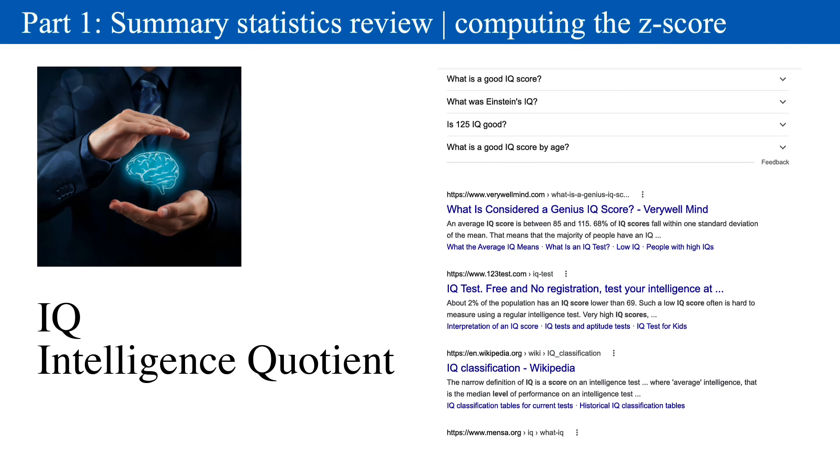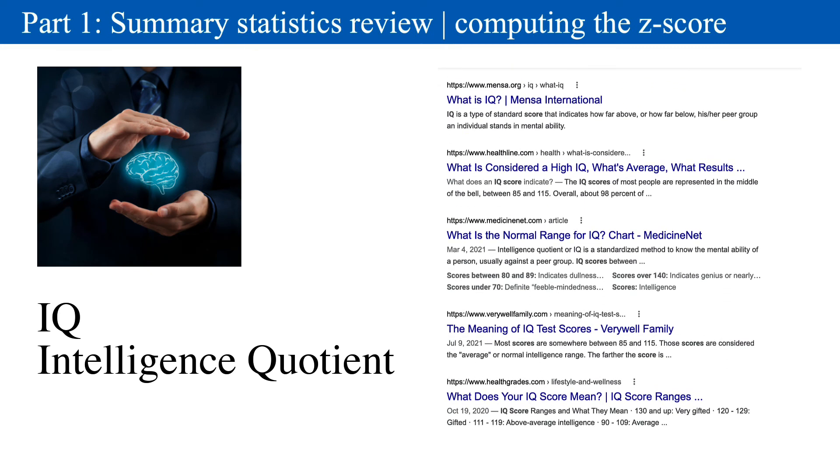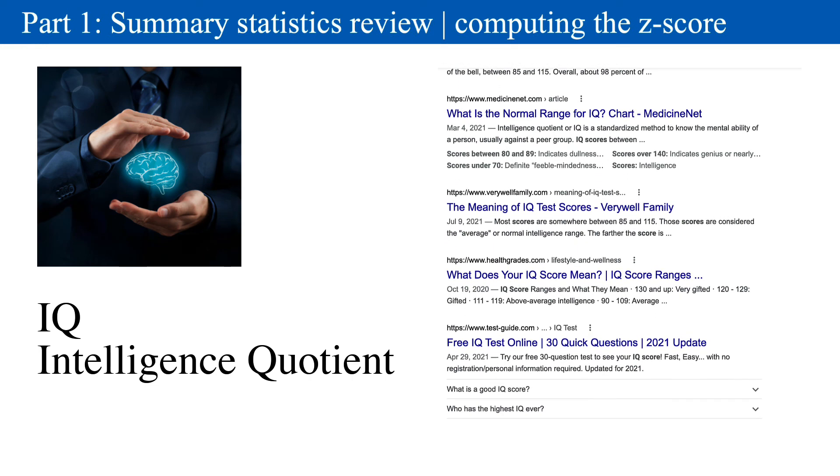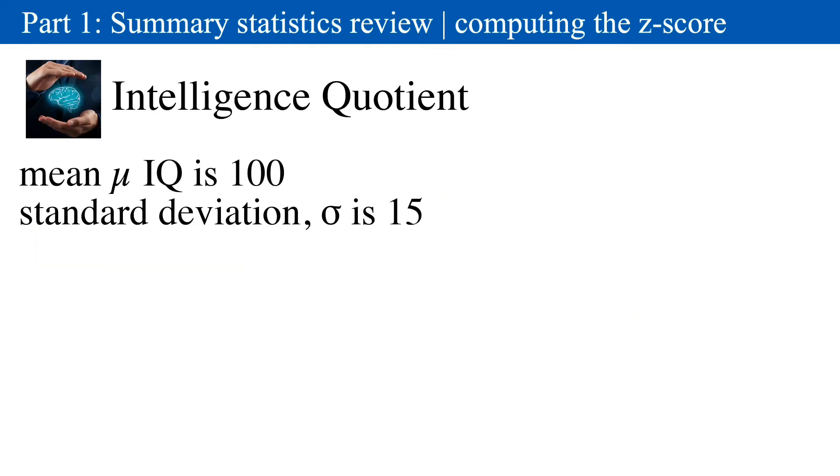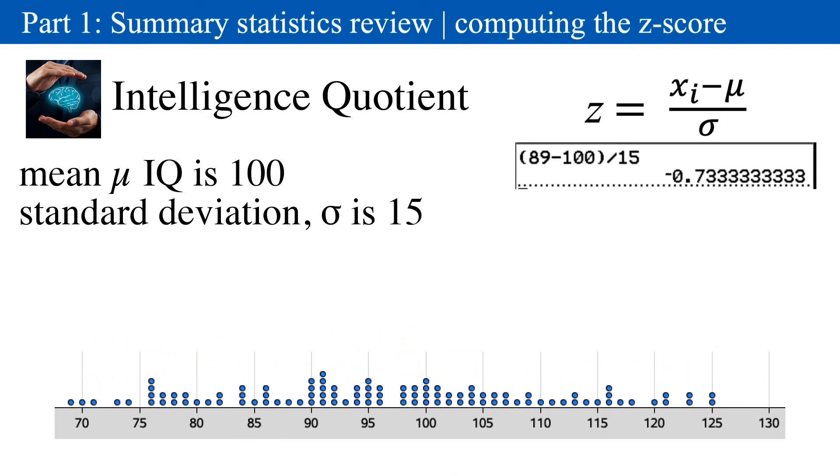Let's take another kind of measurement. Intelligence. Academics and psychologists use IQ scores for measuring intelligence. It's a given that the mean IQ score is 100 with a standard deviation of 15. If you take an IQ test and your score is 89, no need to worry. Your z-score is negative 0.73, and you're still considered normal intelligence.